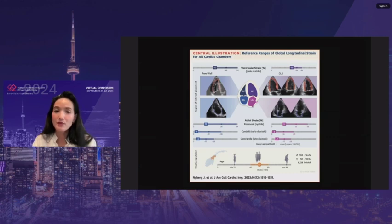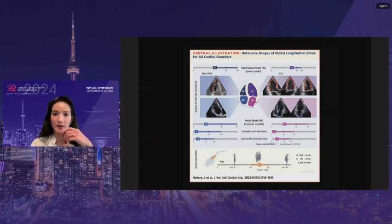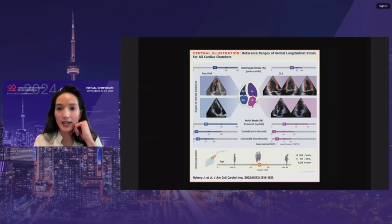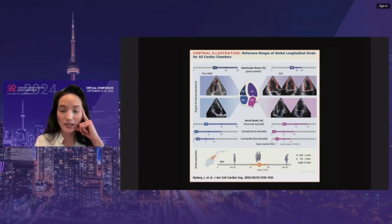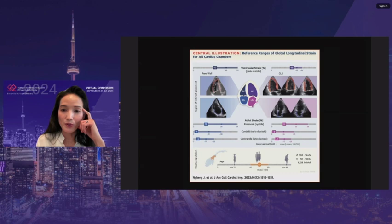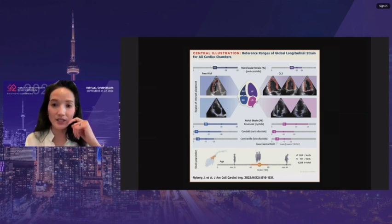In summary, in terms of global longitudinal strain, I do think we should be moving towards assessing that rather than EF alone. Most of the software in your machine should be able to do global longitudinal strains. I know that EF is usually a better tool to communicate with your surgeon, but the more we use GLS, the more I think they will ask. And we can educate our surgical colleagues on the significance and the sensitivity of GLS.